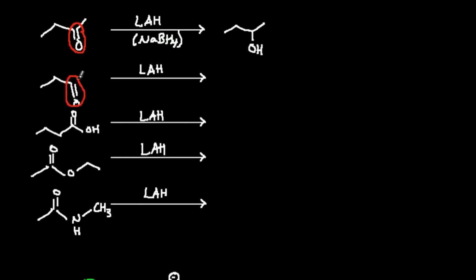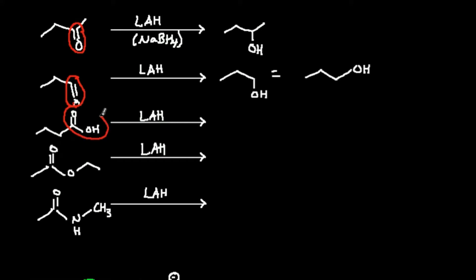LAH now reacts with a carboxylic acid — sodium borohydride could not do this since NaBH4 can only react with ketones and aldehydes. LAH reduces carboxylic acids simply into their corresponding alcohol. Counting the carbons: one, two, three, four — we have a four-carbon primary alcohol with an OH at the end.